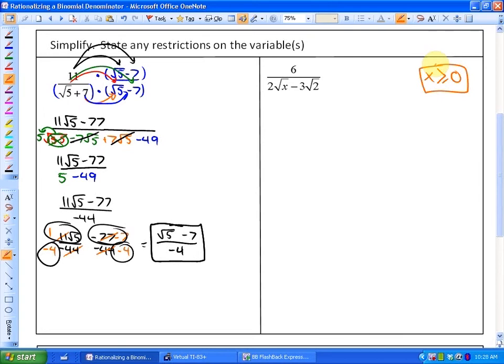The conjugate of 2 root x minus 3 root 2 is, as you may anticipate, is 2 root x not minus 3 root 2, but plus 3 root 2. So if I multiply the numerator and the denominator by 2 root 2.